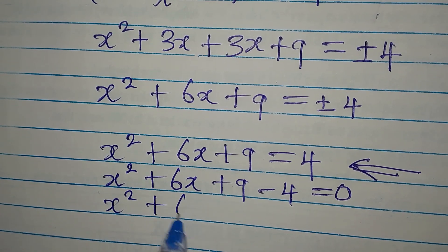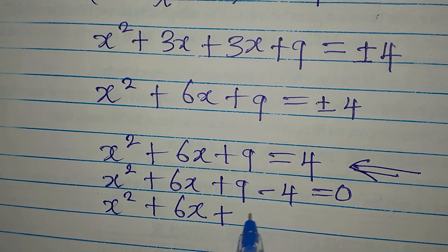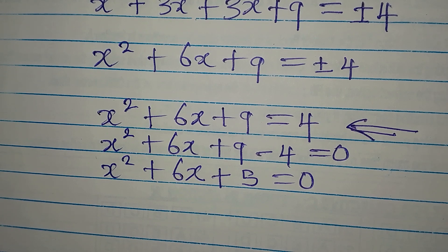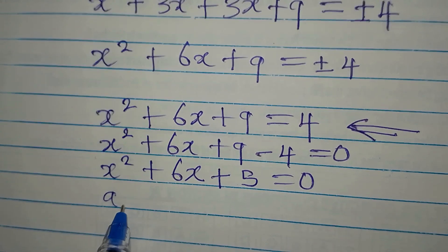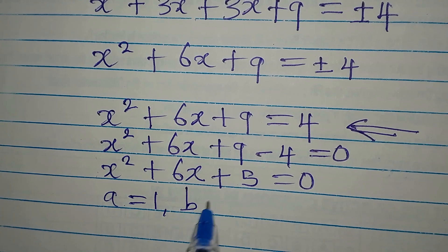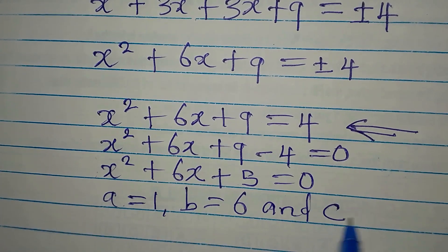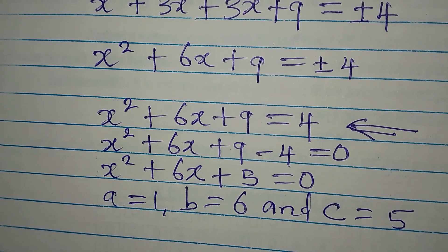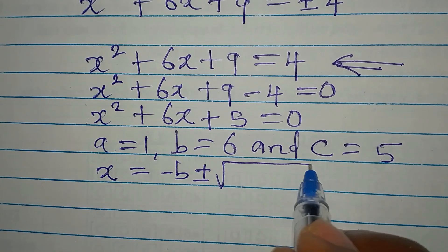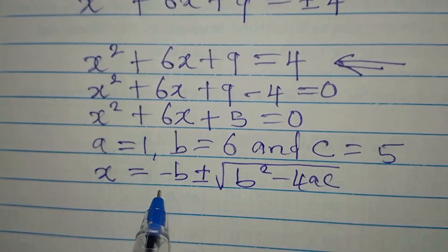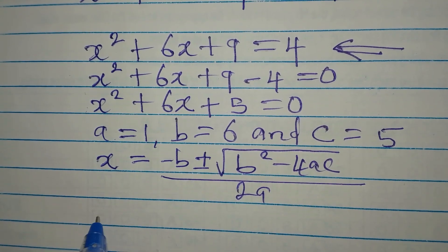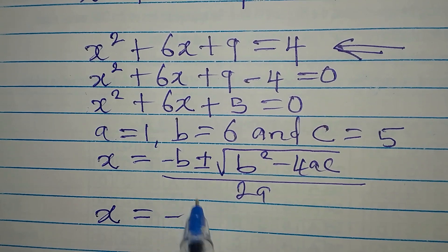So what we'll do now is use the quadratic formula to solve this. Remember that for x² + 6x + 5 = 0: a is the coefficient of x squared, which is 1; b is 6; and c is the constant, which is positive 5. The formula is x = (−b ± √(b² − 4ac)) / 2a.